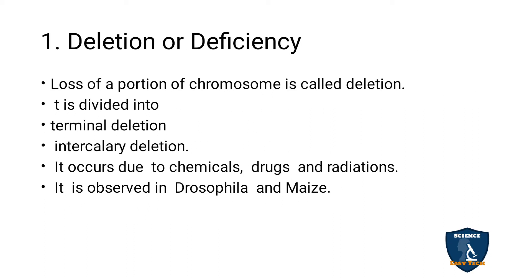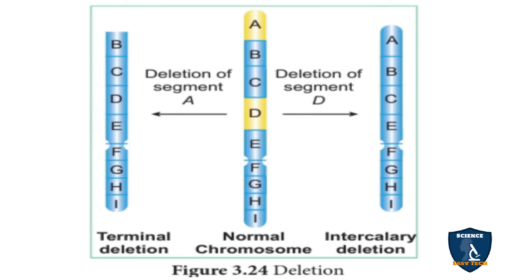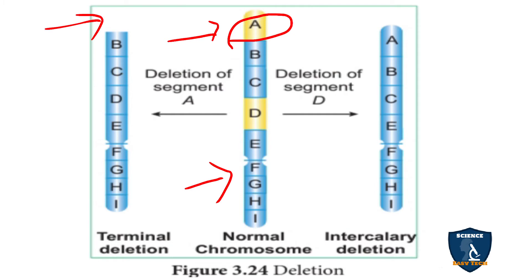First, deletion or deficiency. We are taking a normal chromosome here — you can see the segments labeled A, B, C, D, E, F, G, H, I. A particular segment is deleted. So if the deletion occurs in the terminal part — that is, the A is not seen in this chromosome — the deletion occurs at the tip of the chromosome, and it is called terminal deletion.